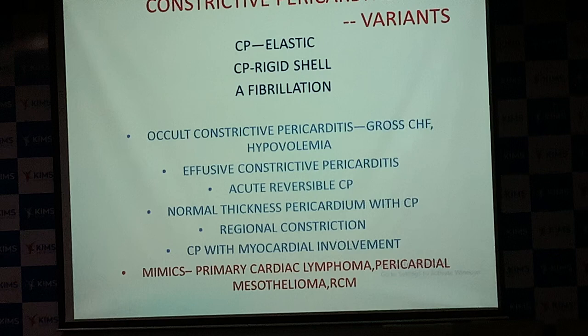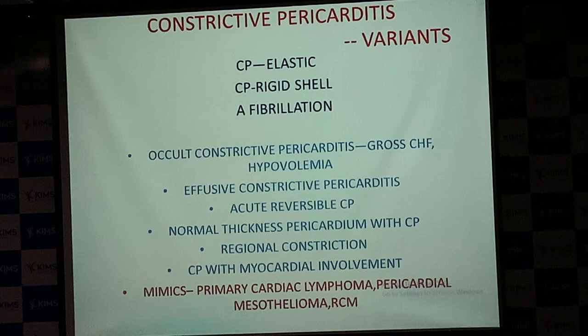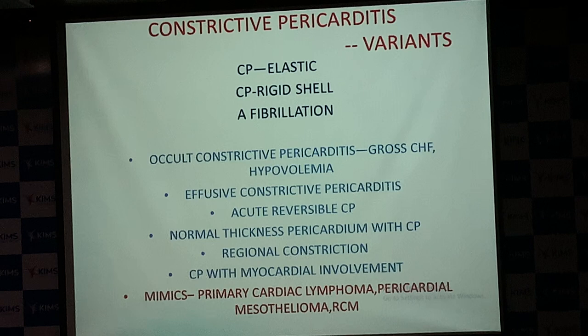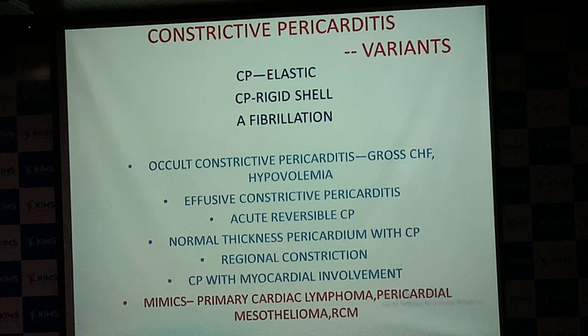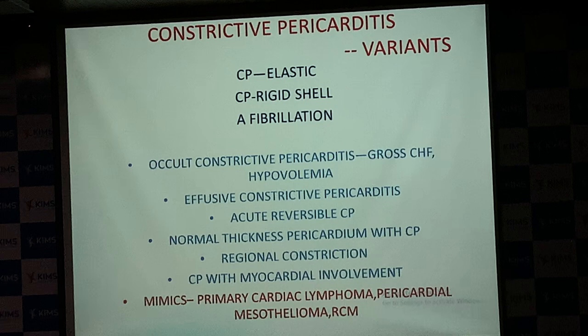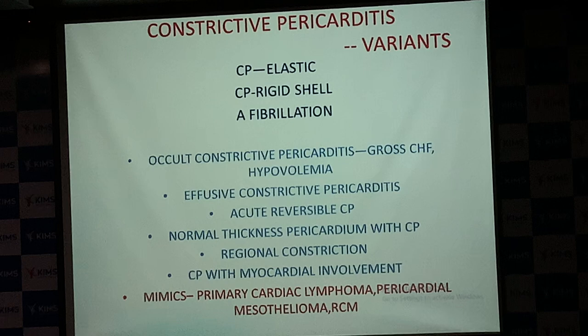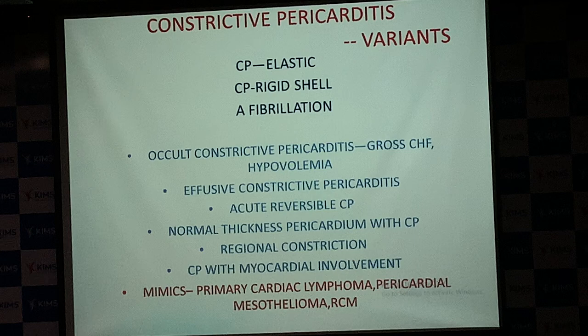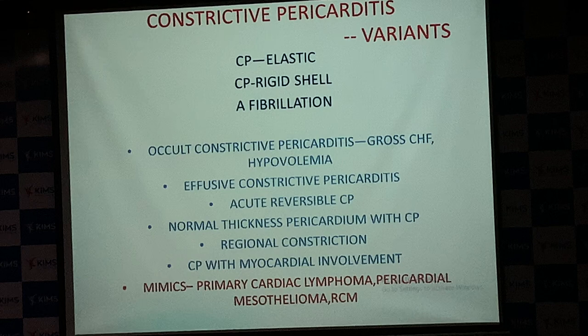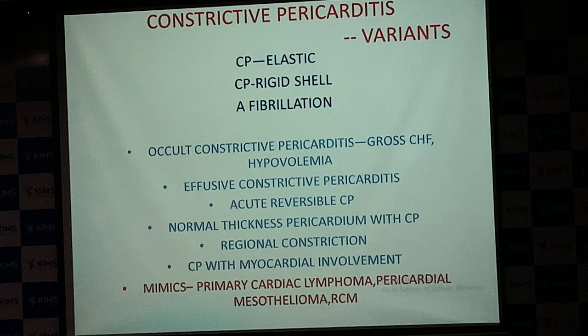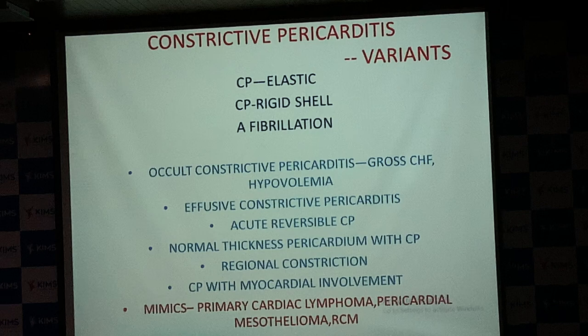Some variants of constrictive pericarditis need to be remembered, increasingly due to post-surgical and radiation-induced cases. Elastic constrictive pericarditis: pericardium still has some expandability and behaves differently. Rigid shell constrictive pericarditis: pericardium is thick, fibrotic, and calcific, and intracardiac volume is absolutely fixed — no ability to change. These two subtypes have different physical characteristics and hemodynamics.